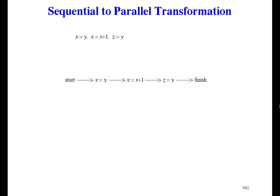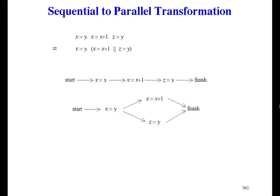Here's an example: three assignments in sequence with no concurrency. The first two assignments both assign to x, so they cannot be executed concurrently. But the last two assignments work with different variables, so we can make them concurrent. Now the first assignment, x gets y, is followed immediately by both of the other assignments.